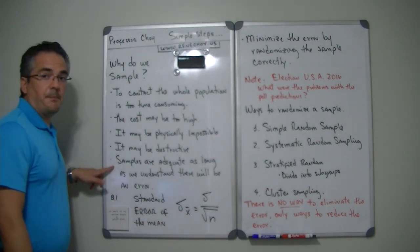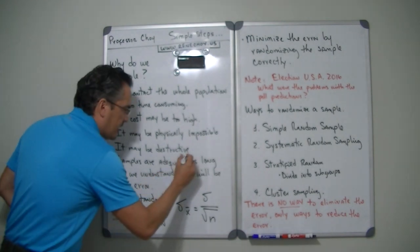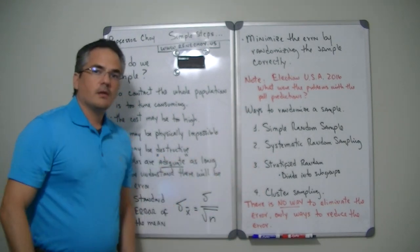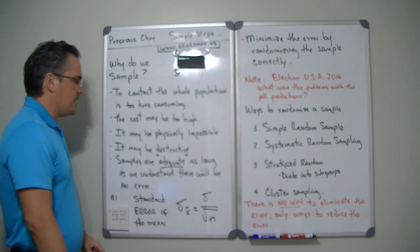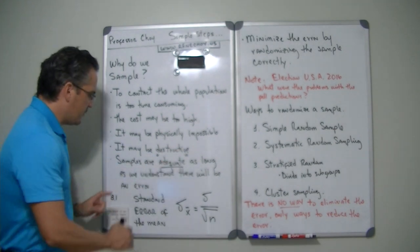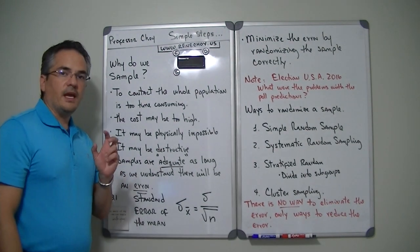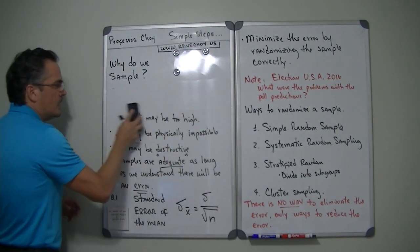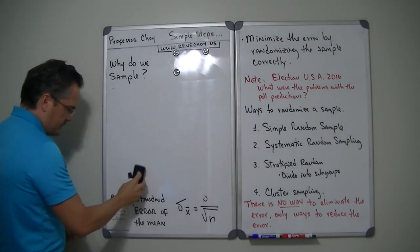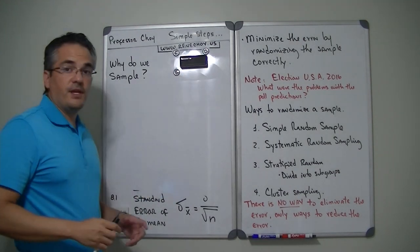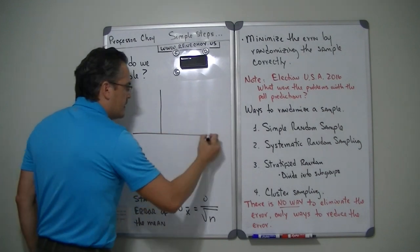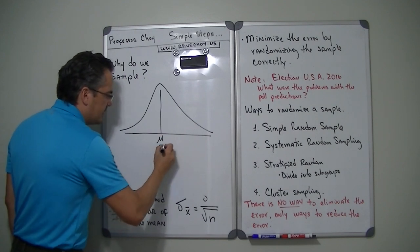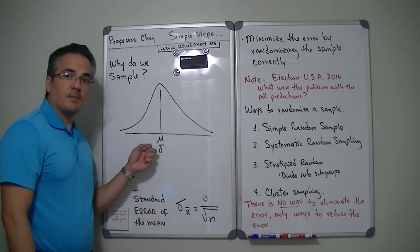Most of the time, samples are adequate — but you have to make sure that they're correct. You need to understand that there is an error associated with a sample. Imagine that my population has a normal distribution with a mean of mu and a standard deviation sigma — that is my population information.